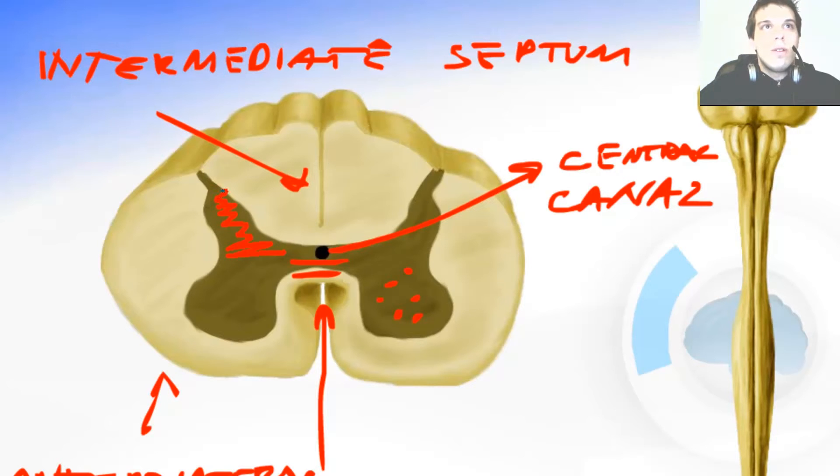This part over here of the spinal cord is the posterior horn of the gray matter. It is the sensible horn. It is called the sensible horn because the posterior sensible roots of the spinal nerve come to the spinal cord through this horn.